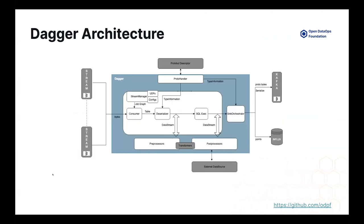Before diving into use cases, here's a very high level architecture. There is a consumer inside Dagger that pulls data from different streams — batch sources as well as stream sources. Then there is a deserializer, which makes it easy to deserialize the data in whatever format it's in. There is a pre-processor that lets you hook certain logic before the core SQL execution or transformation happens. And then there is a post-processor, which can also talk to external data sources. The last piece is sync, which allows you to sync to multiple sources, including serialization into formats like protobytes.